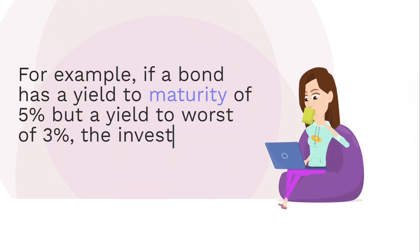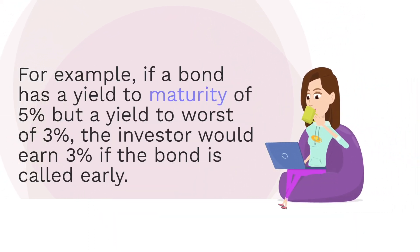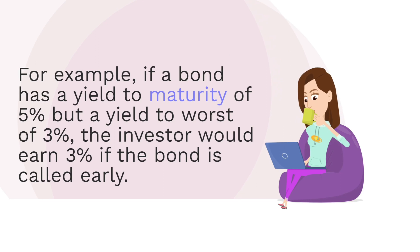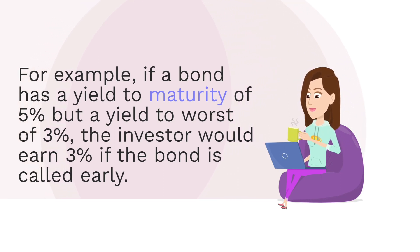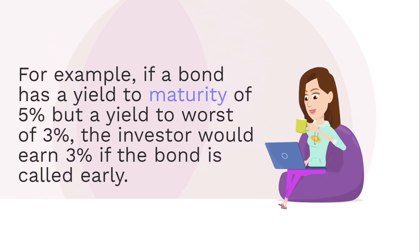For example, if a bond has a yield to maturity of 5% but a yield to worst of 3%, the investor would earn 3% if the bond is called early.